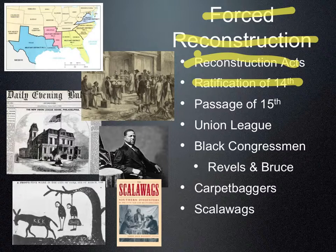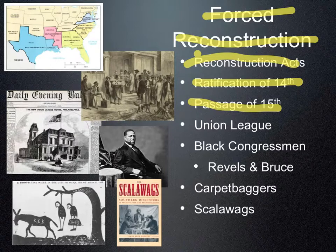The worry was that as soon as states got back in, they would change their state constitutions to remove Black voting. To make sure all of the 14th Amendment protections didn't get removed, Congress turned them into an amendment. The same thing with the right to vote for Blacks — it would be turned into an amendment. The 15th Amendment was passed by Congress and ratified by the required number of states in 1870.